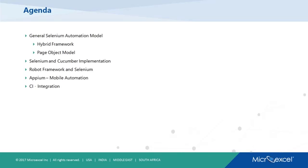First, I will start with the general Selenium automation model, and I will talk about two frameworks which are widely used in a Selenium model: hybrid and page object model. Next, I will speak about how we can combine the Selenium and Cucumber implementation in a BDD environment.